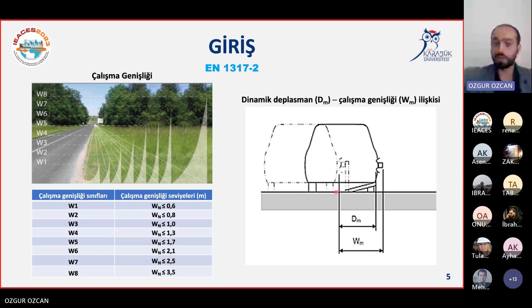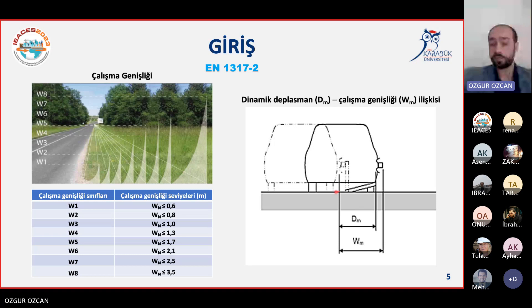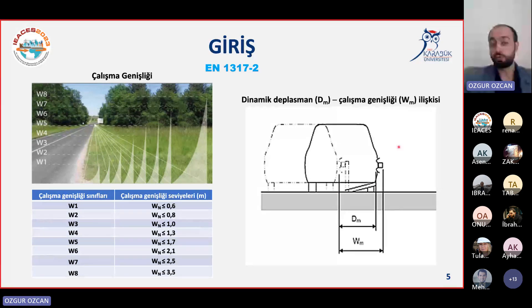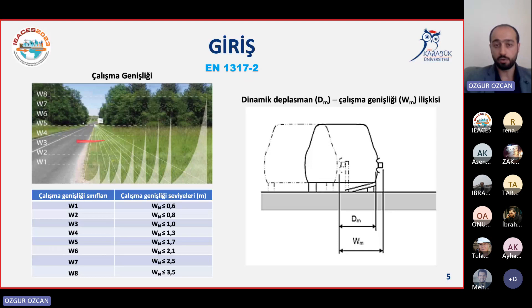TS EN 1317 otokorkuluklar ve özellikle araç çarpışma testleri için düzenlenen bir standarttır. Bu standardın ikinci kısmında otokorkuluk sınıflandırması için kullanılan parametreler bulunmaktadır. Mesela H1W2A tipi otokorkuluk dediğimizde: H1 yolda tutma seviyesi, W2 çalışma genişliği, A ise çarpma şiddeti seviyesidir. Standartta W1'den W8'e kadar çalışma genişliği sınıfları bulunmaktadır.